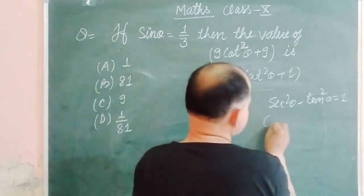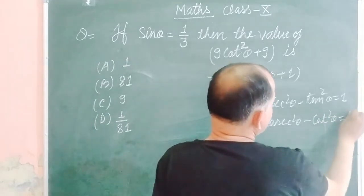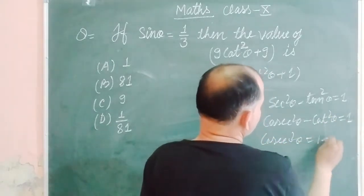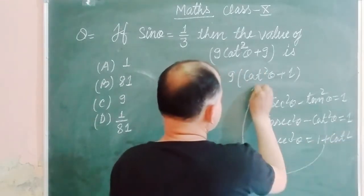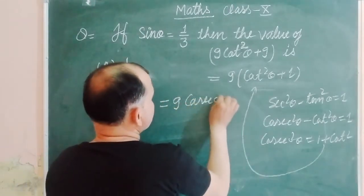So we use cosec²θ - cot²θ = 1, therefore cosec²θ = 1 + cot²θ. We put this value here and we get 9cosec²θ.